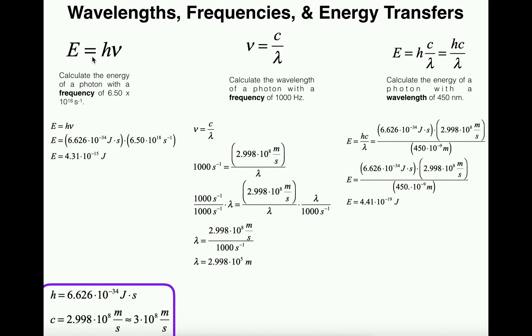Let's move on to the second question. We want to calculate the wavelength of a photon with a frequency of 1000 Hertz. For the purpose of this problem, Hertz is the same thing as inverse seconds or seconds to the minus first power. Whenever you're interconverting between wavelength and frequency, it doesn't matter which one's given, you always use this equation.